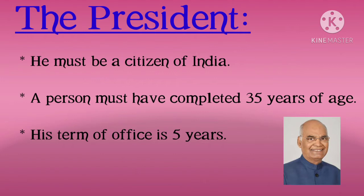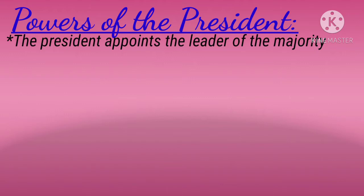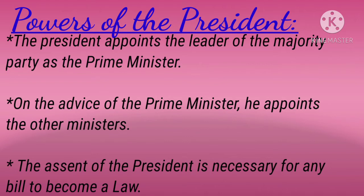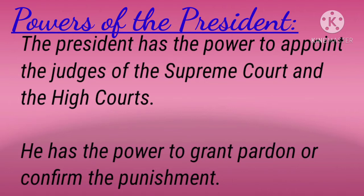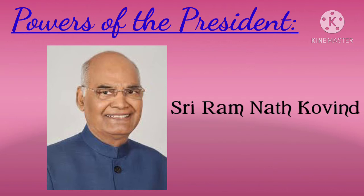To become the President of India, one must be a citizen of India and must have completed 35 years of age. The President is elected for 5 years. The President appoints the leader of the Majority Party as the Prime Minister and, on the advice of the Prime Minister, appoints the other ministers. The assent of the President is necessary for any bill to become a law. The supreme command of the Defence Forces is vested with the President, and he has the power to declare war or peace. The President also appoints the judges of the Supreme Court and the High Courts, and has the power to grant pardon or confirm the punishment. Sri Ramnath Covind is the current President of India.